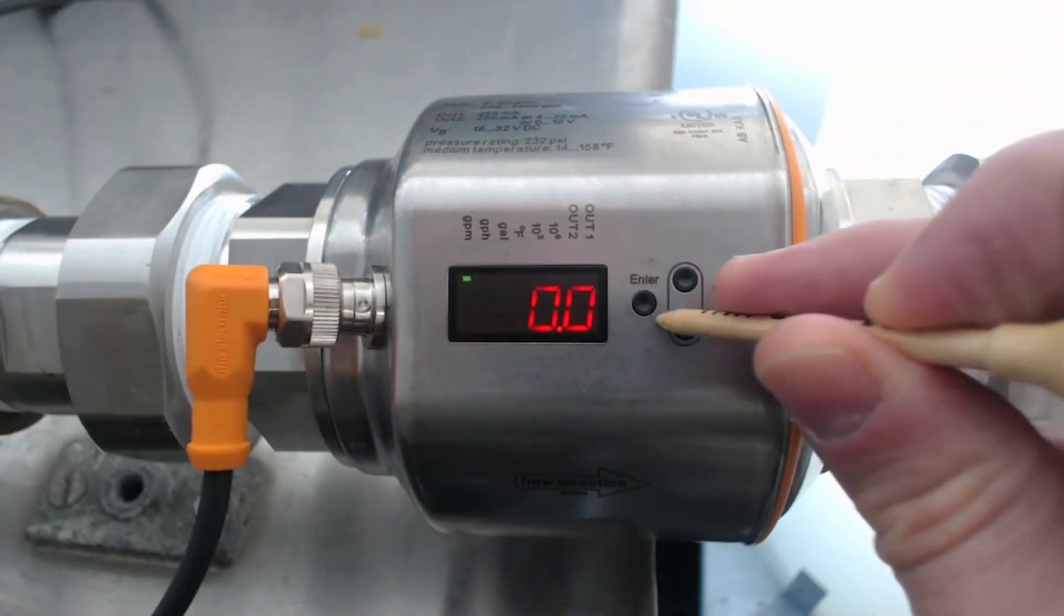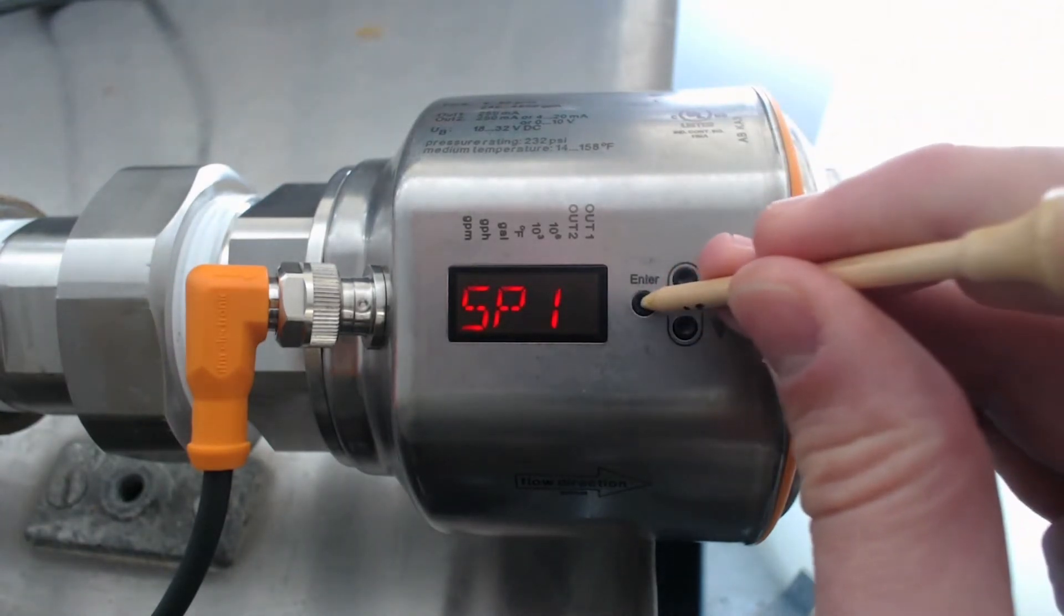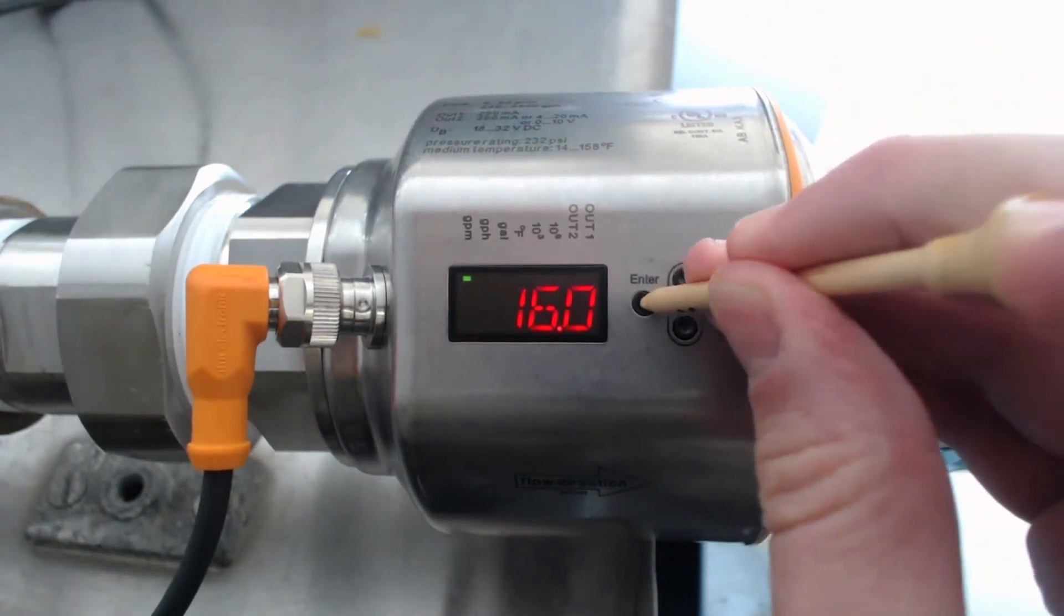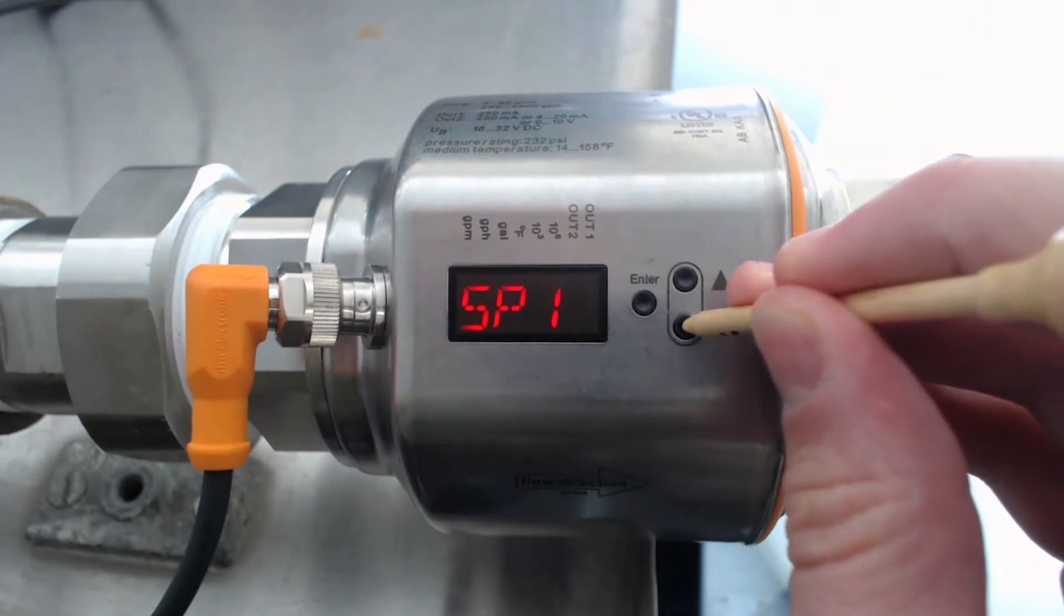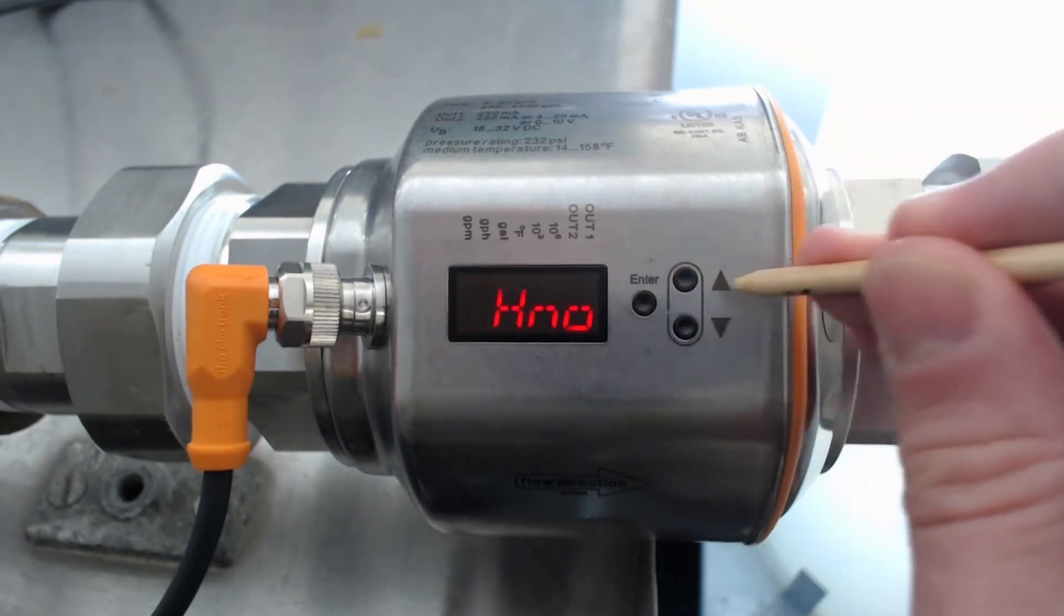Looking at an IFM magmeter, press Enter for the menu. At SP1, press Enter again to set the switch point. For output 1, push the lower button until OU1 appears. Press Enter.